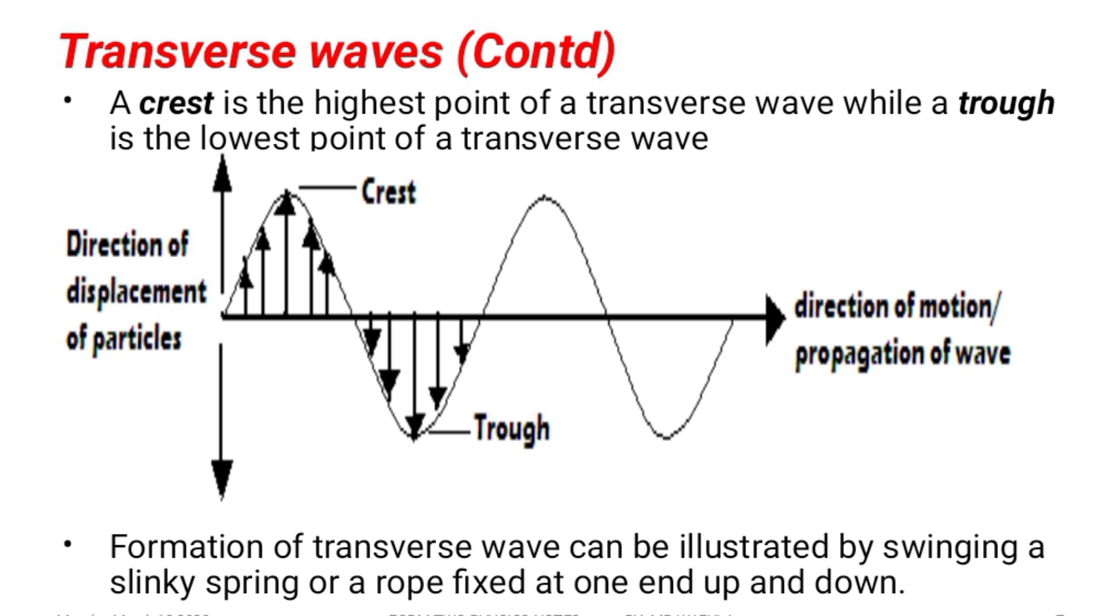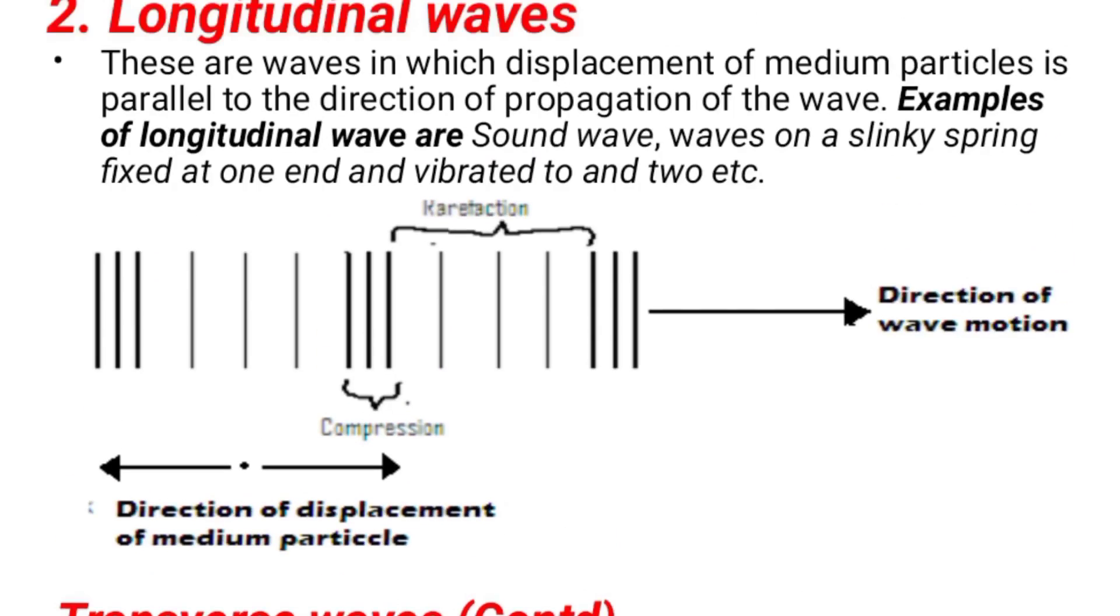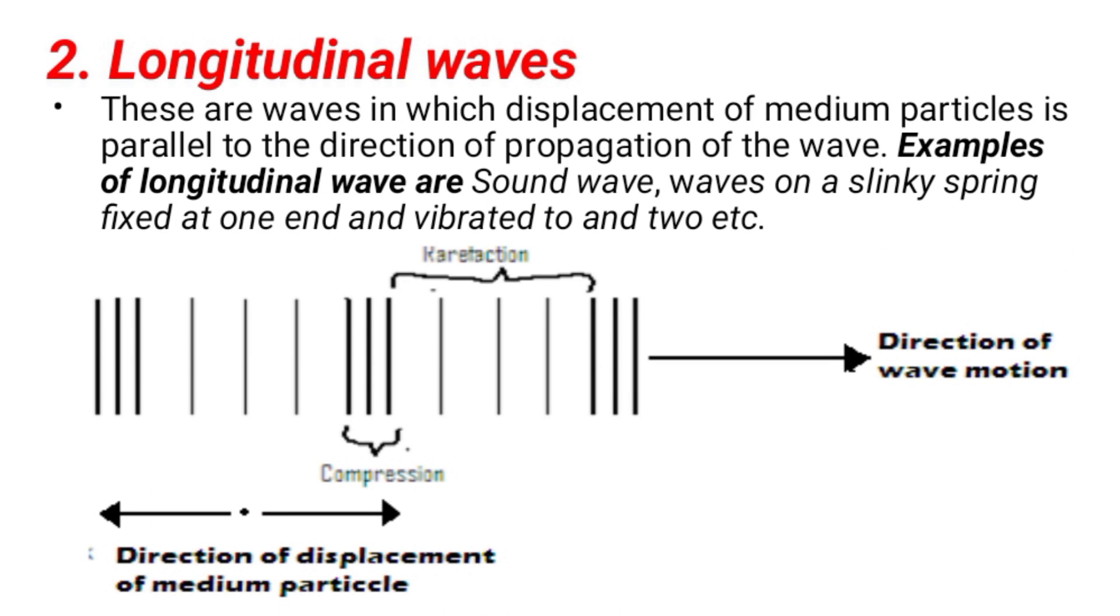Longitudinal waves. These are waves in which the displacement of the medium particles is parallel to the direction of the propagation of the wave. The example of longitudinal waves are sound wave. In sound wave, we have compressions and rarefactions. The distance between a compression and a rarefaction gives us a complete wave.